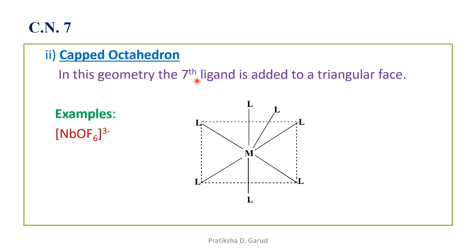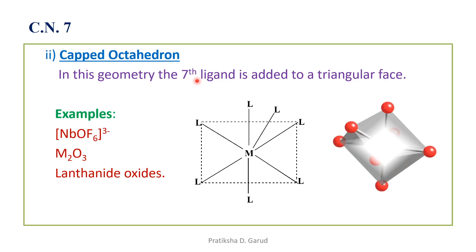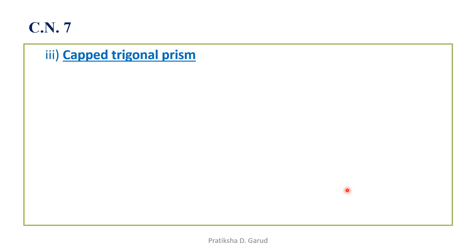Examples of the capped octahedron are [NbOF6]³⁻, Mo₂O₃, and lanthanide oxides. In this geometry, four ligands form one plane, one ligand is above, one is below, and the seventh ligand is added to a triangular face.